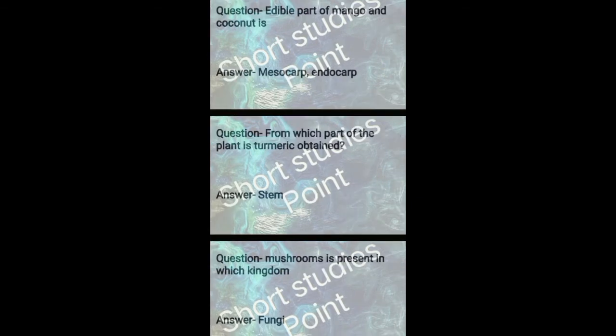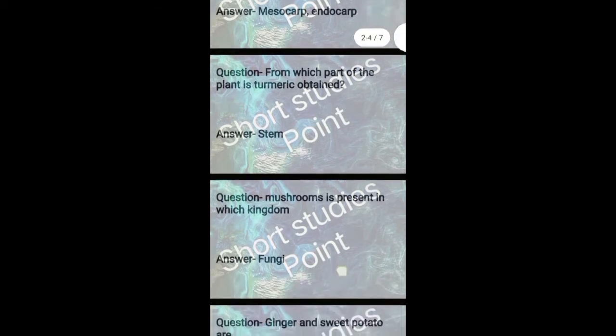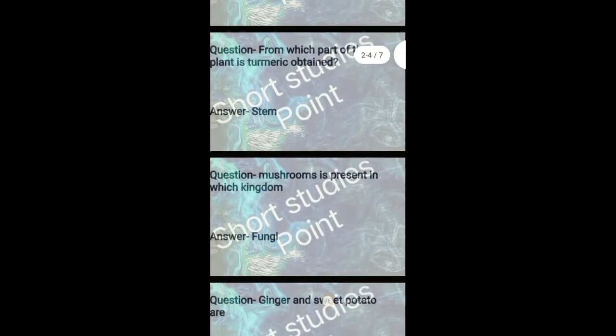Question: Edible part of mango and coconut is? Answer: Mesocarp and endosperm. Question: Mushroom is present in which kingdom? Answer: Fungi. Next question: From which part of plant is turmeric obtained? Answer: Stem.